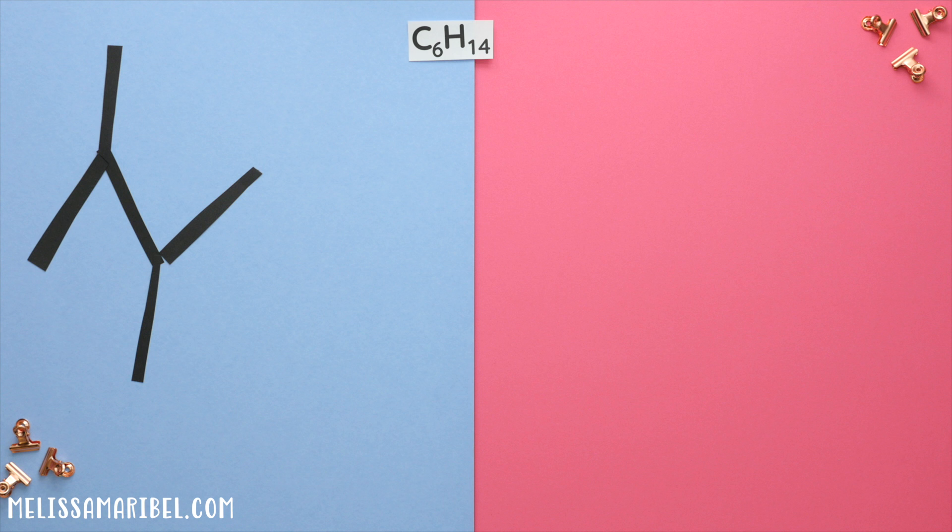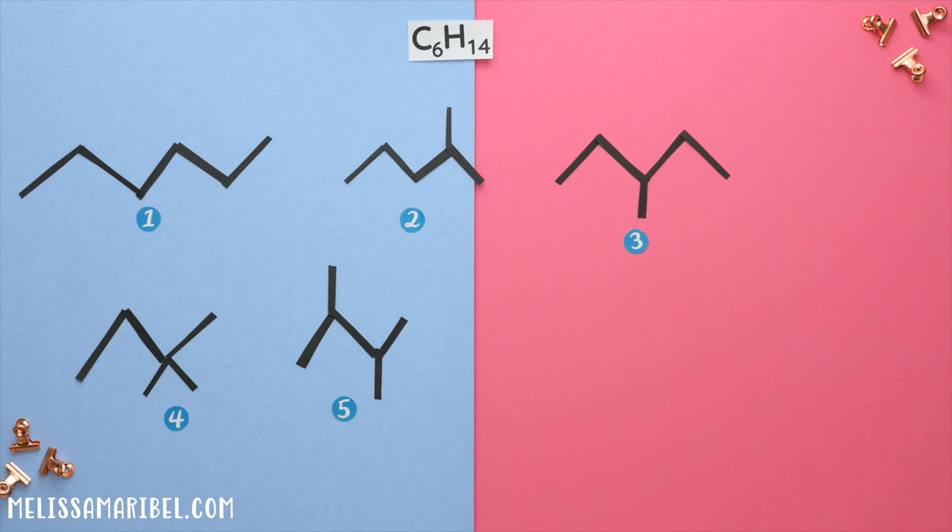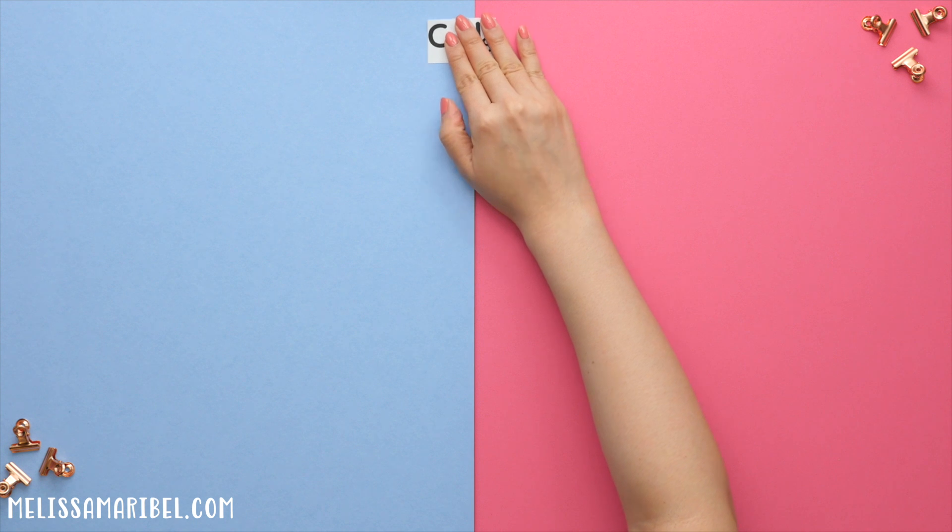If we were to move this back, it would revert to one of the isomers we already found. So that's how we know to stop. And we found all 5 constitutional isomers.